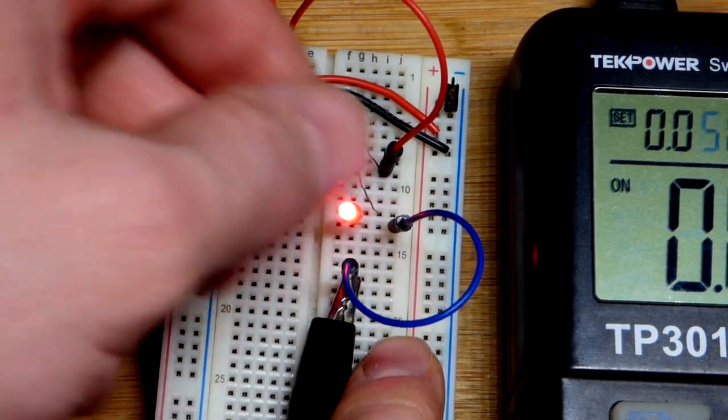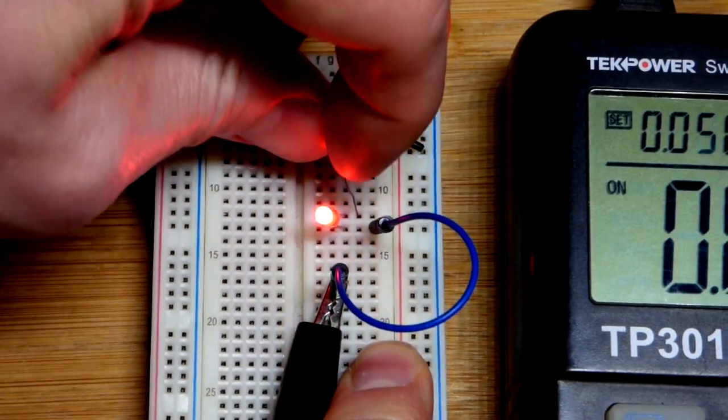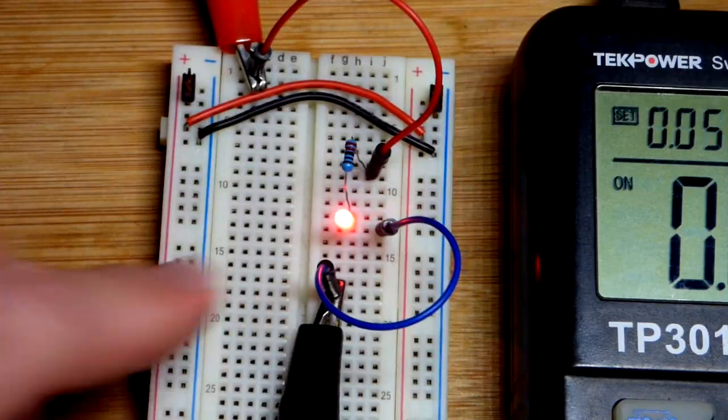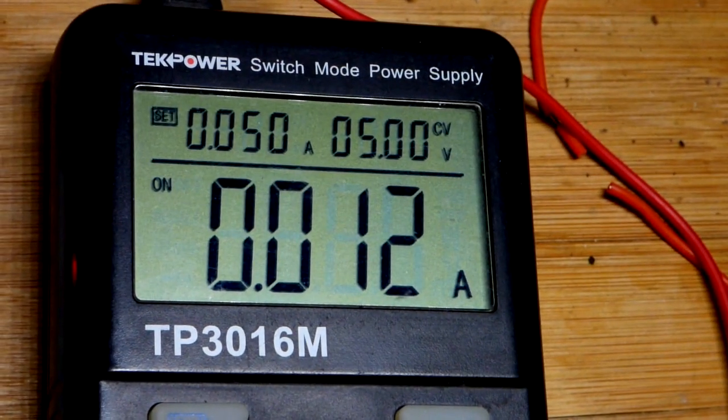The same thing with the black alligator clip. Again, this resistor has thin leads so I'm going to move it over to the same row as the LED right there. And we do see 12 milliamps of current, but generally